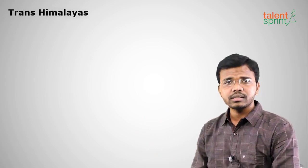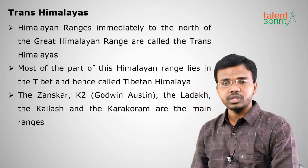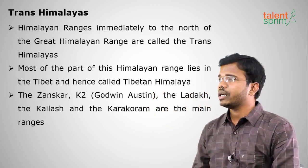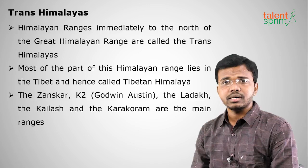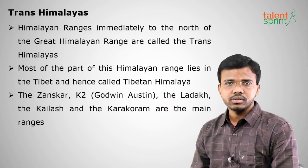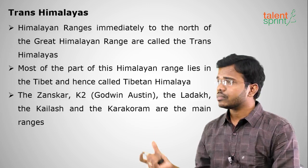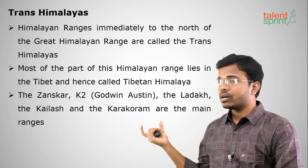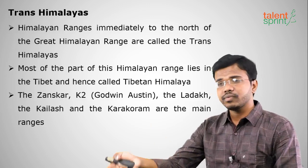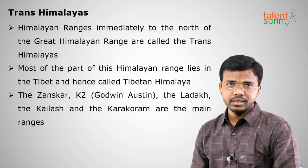The Trans-Himalayas, also called Tibetan Himalayas, extend to Pakistan, Afghanistan, China, and parts of India. They lie above the Greater Himalayas and are mostly in Tibet. Famous ranges include Zanskar, K2 (also known as Godwin Austen), Ladakh, Karakoram, and Kailash ranges. Mount Kailash is famous in Hinduism as the abode of Lord Shiva, and Lake Manasarovar lies at its edge — both are located in Tibet, China.